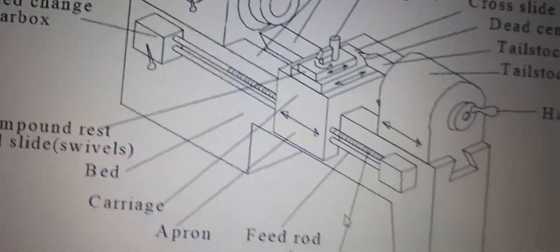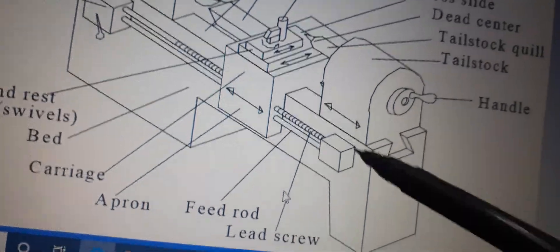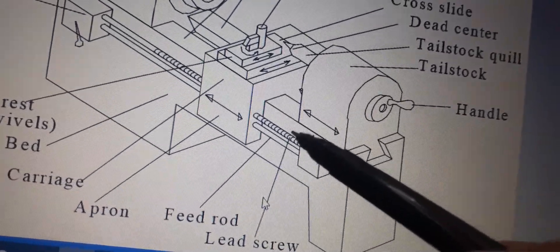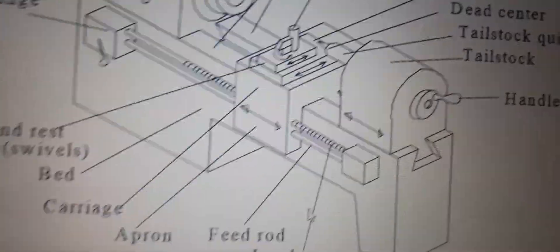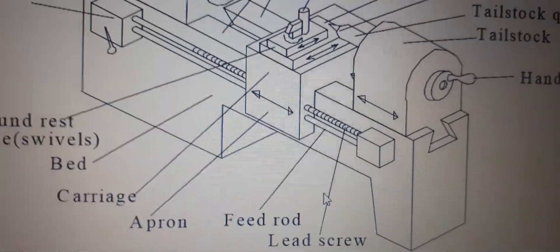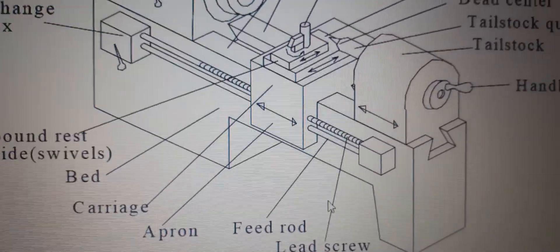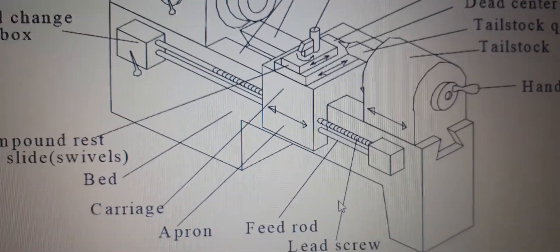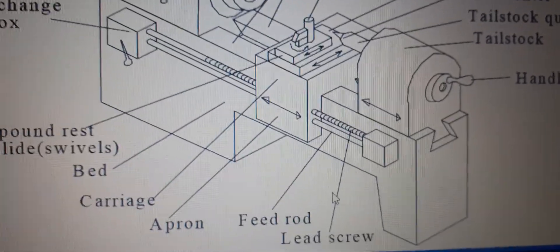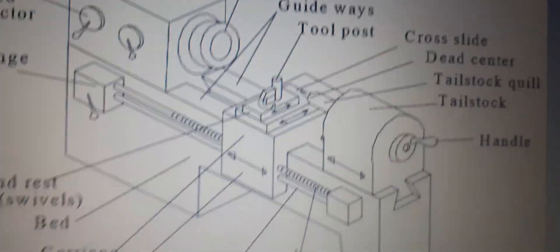The lead screw, which you can see in the figure, is a long steel square-threaded shaft and operates exclusively for thread cutting. It acts as a master screw to move the carriage to perform thread cutting operations. With this, we end today's session.